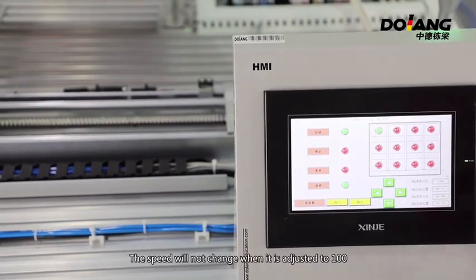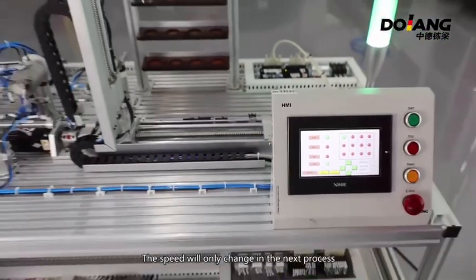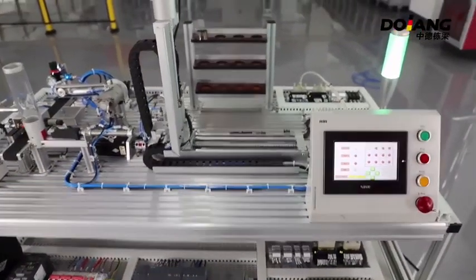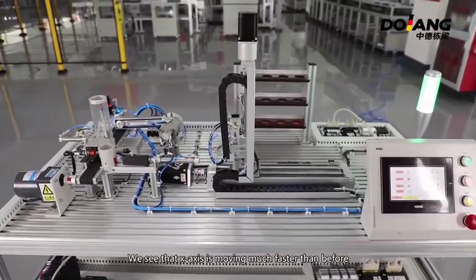The speed will not change when it adjusts to 100. The speed will only change in the next process. We see that the X-axis is moving much faster than before.